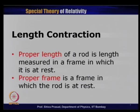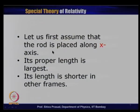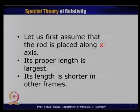Let us assume that this particular rod is along the x direction — the direction of relative velocity between the frames. We will show that its proper length is the largest, and if you go to any other frame in which there is relative motion along x, its length will turn out to be shorter. That is why it is called length contraction.